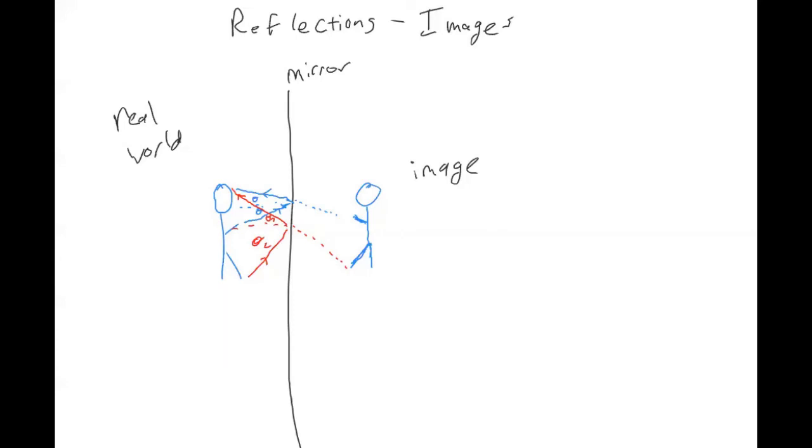And then on the other side is called an image. So if you think about looking at a mirror, you see something that appears to be behind the mirror. Right? So what you're seeing is your brain projecting backwards this incoming. So for example, this light ray is being projected over here. And then you're seeing that image behind the mirror. Does that make sense?